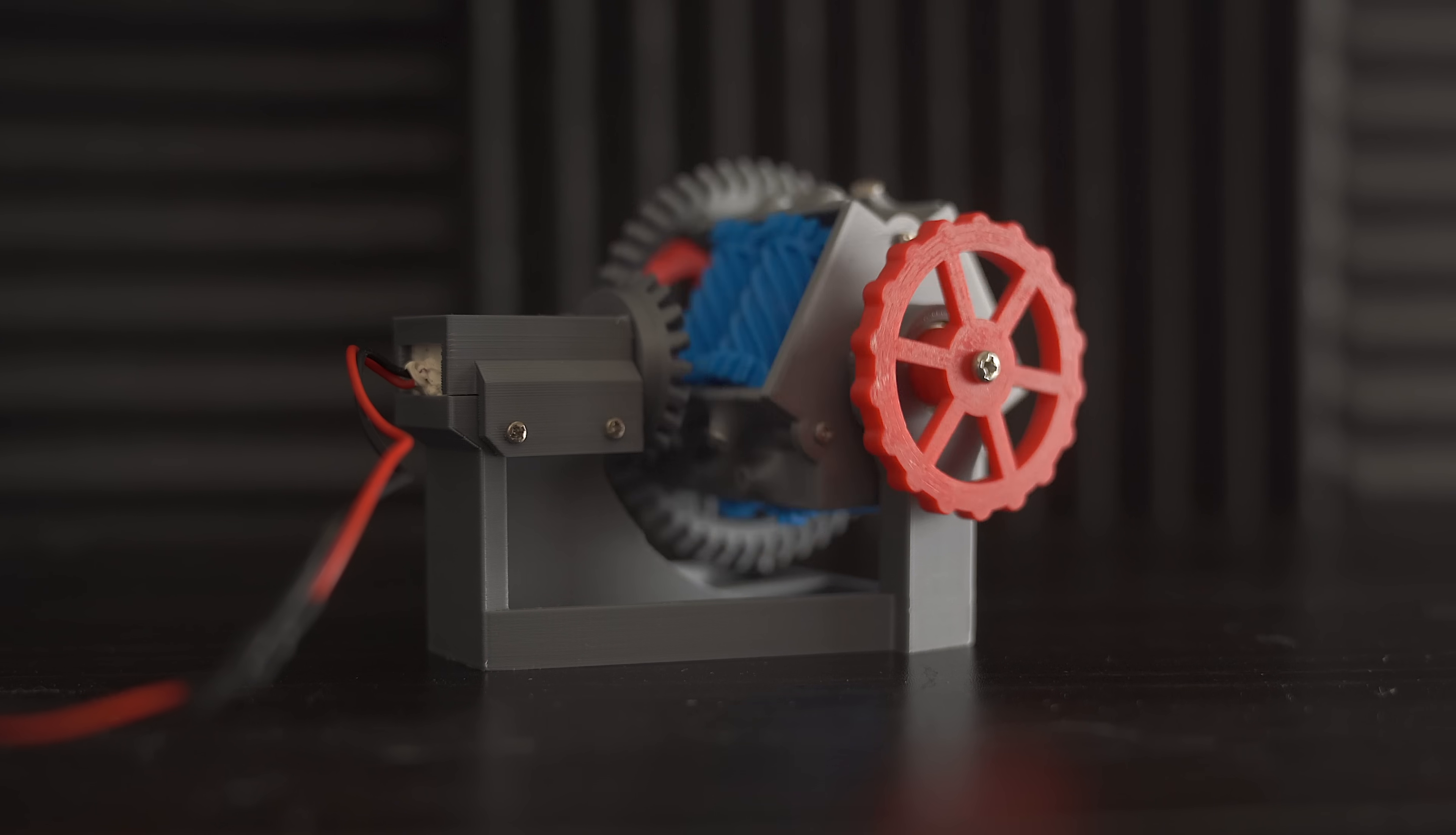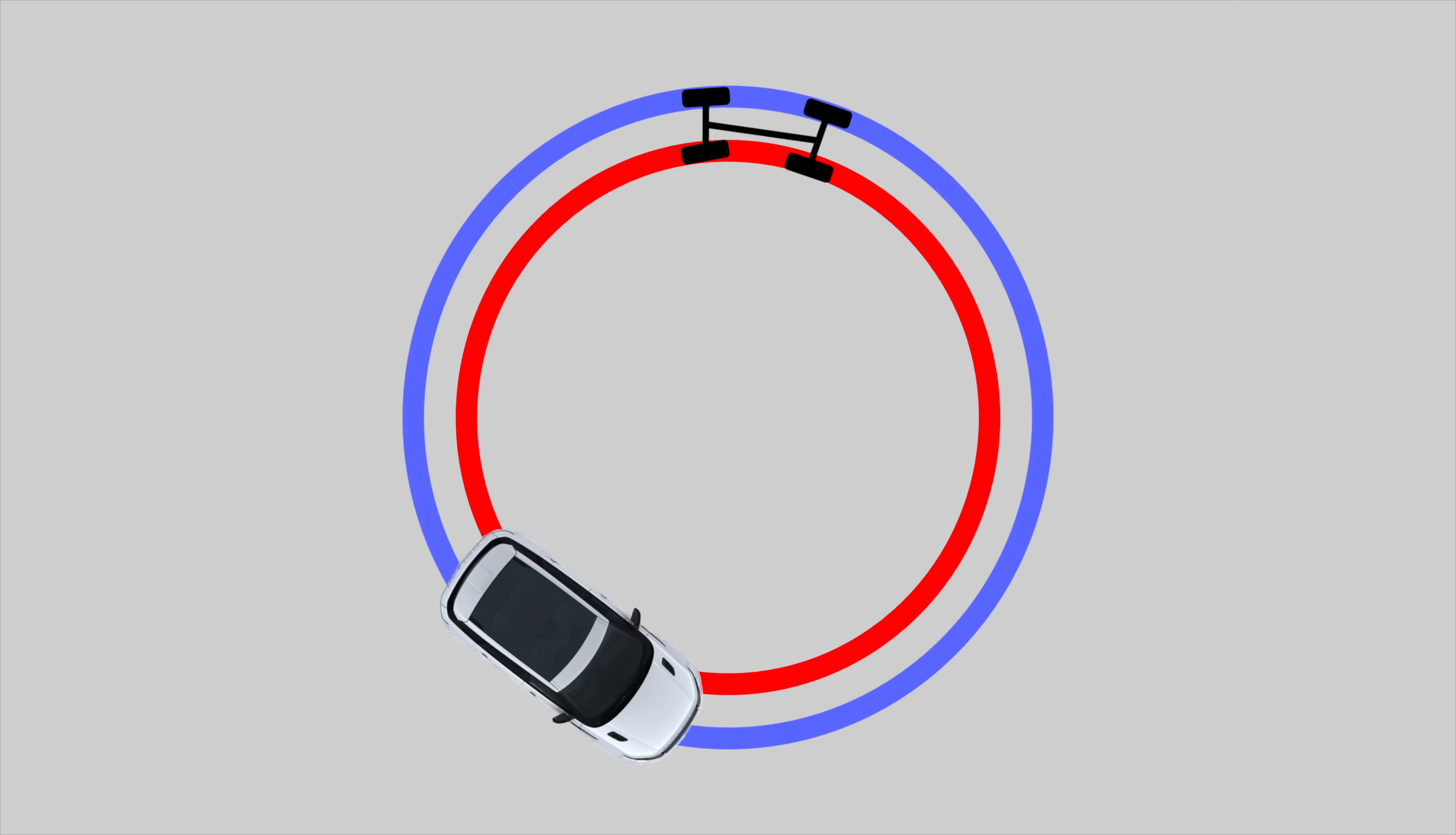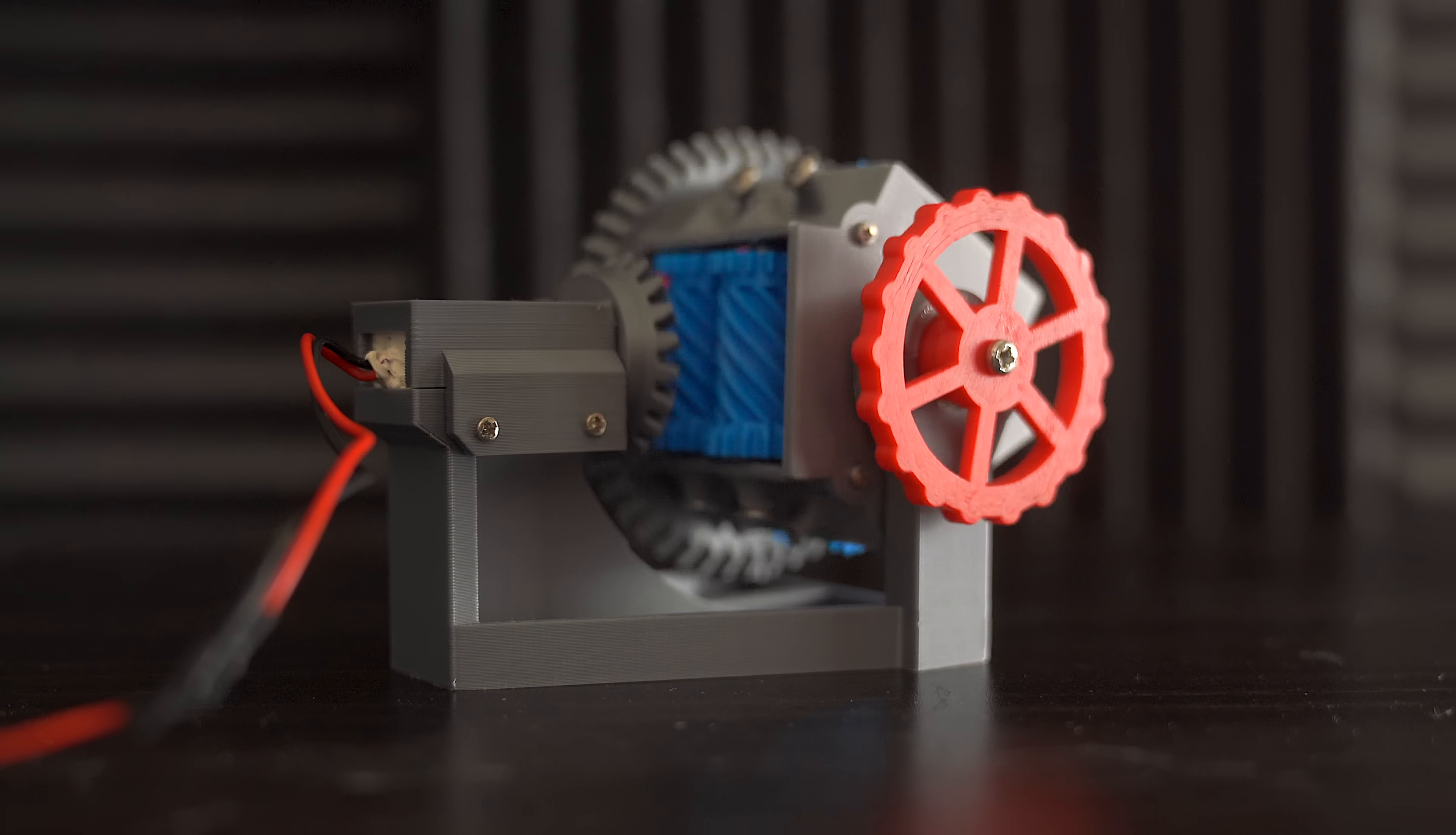This is what makes the other wheel spin twice as fast when I stop one wheel. But this is true with practically all differentials. What about this differential makes it special?